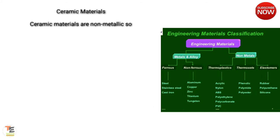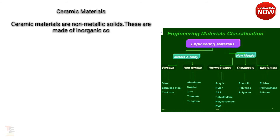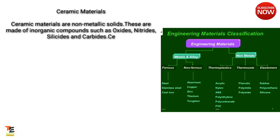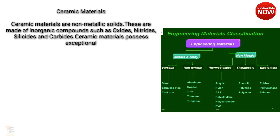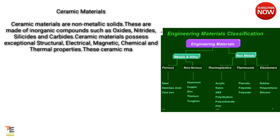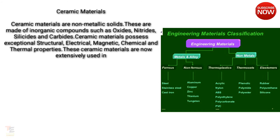Ceramic Materials — ceramic materials are non-metallic solids. These are made of inorganic compounds such as oxides, nitrides, silicides, and carbides. Ceramic materials possess exceptional structural, electrical, magnetic, chemical, and thermal properties. These ceramic materials are now extensively used in different engineering fields.